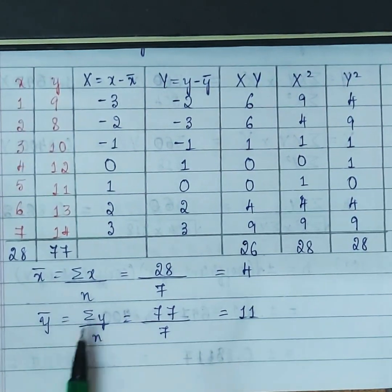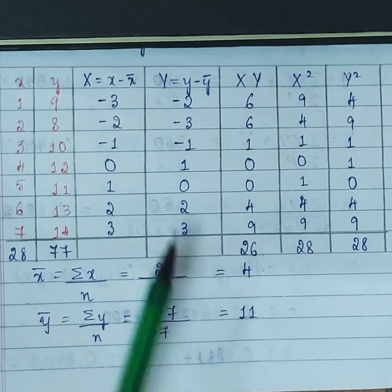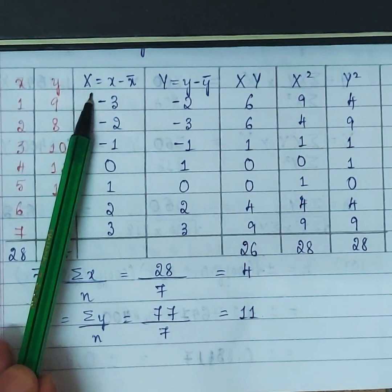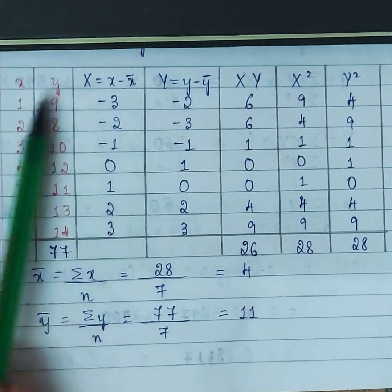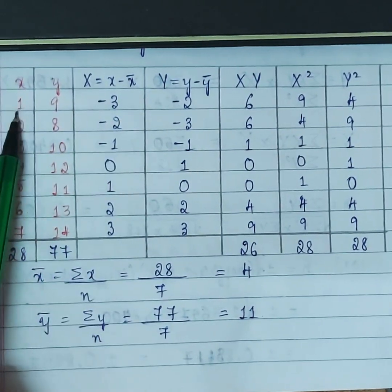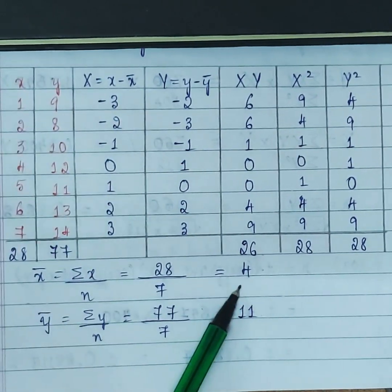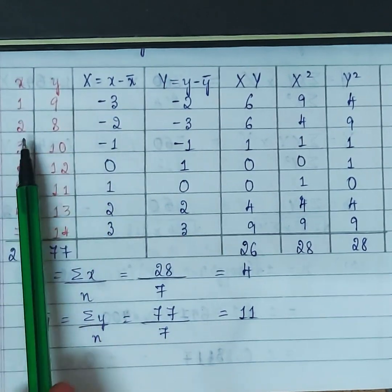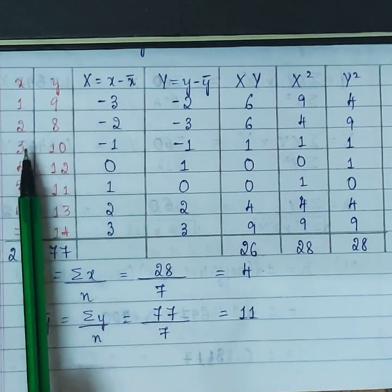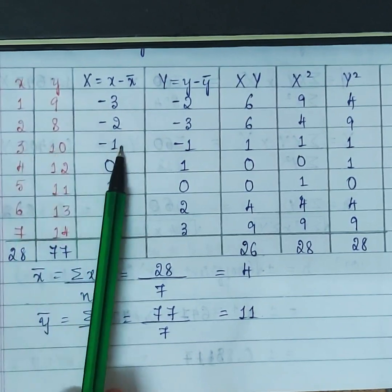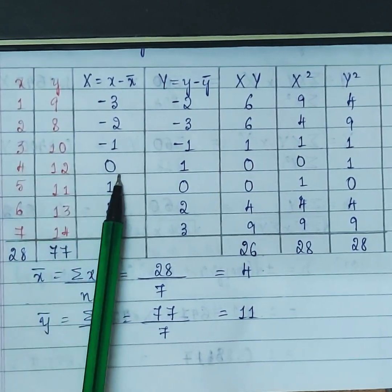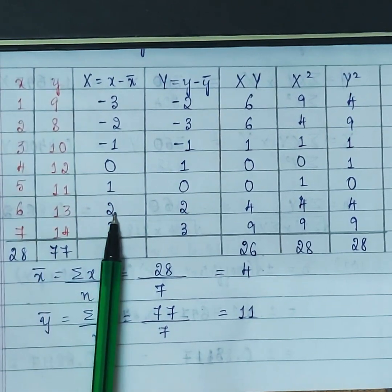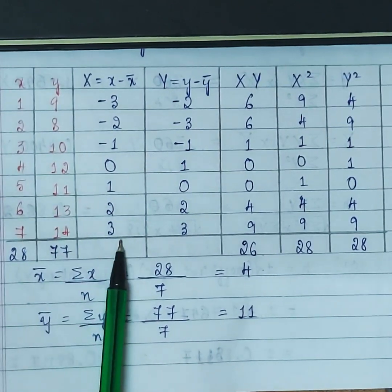Once we have x̄ and ȳ, we find Capital X and Capital Y. Capital X is small x minus x̄. Since x̄ = 4: 1−4 = −3, 2−4 = −2, 3−4 = −1, 4−4 = 0, 5−4 = 1, 6−4 = 2, 7−4 = 3.